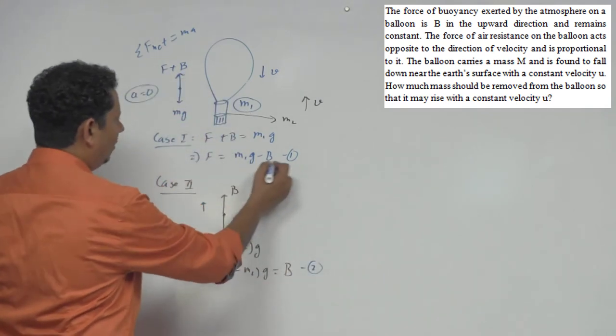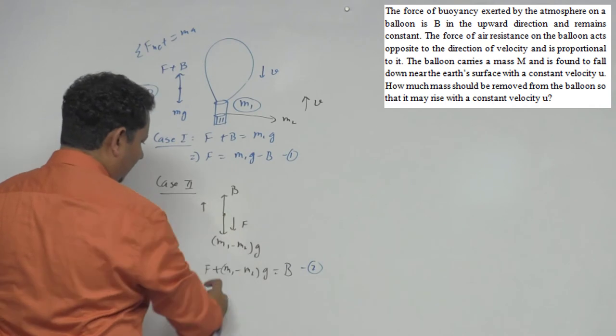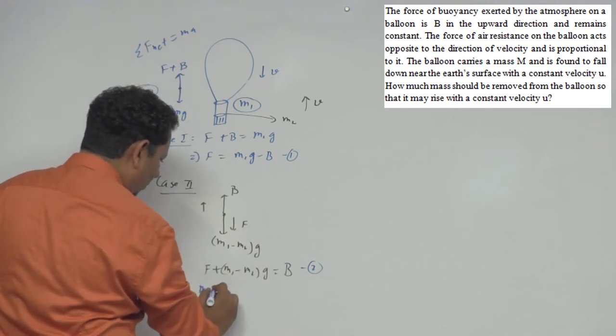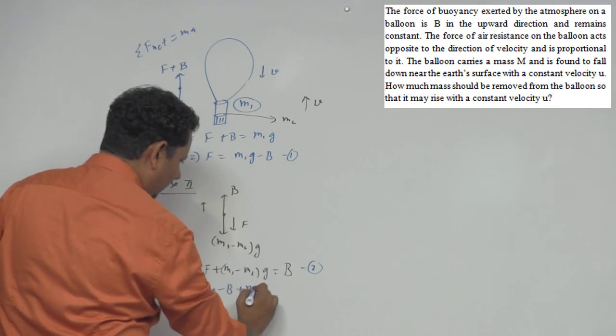Now in this case if we insert the value of f that we got, we can write this as the value of f is M1 G minus B, plus M1 G minus M2 G will be equal to B.